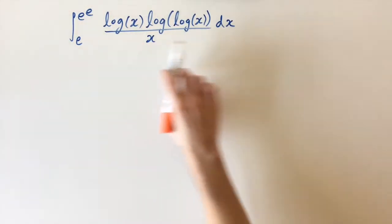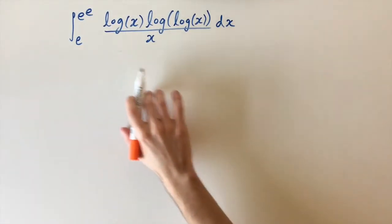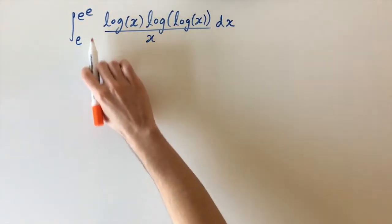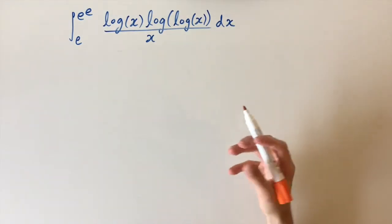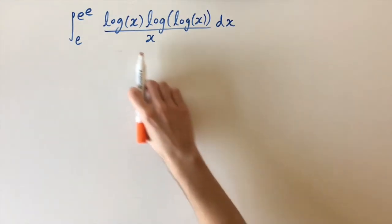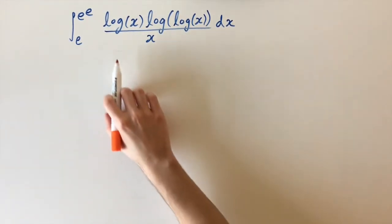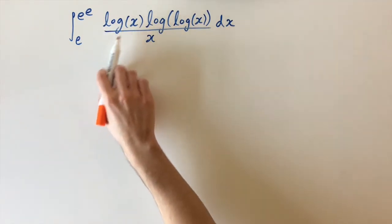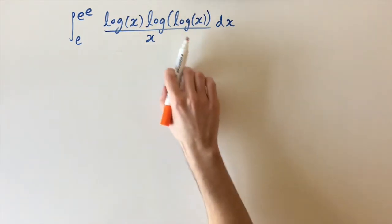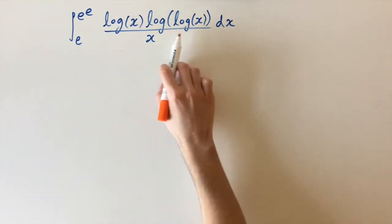We've got this crazy looking integral with loads of logs and weird integral limits. The key observation we're going to need is that we have loads of logarithms, but we also have the term 1 over x.